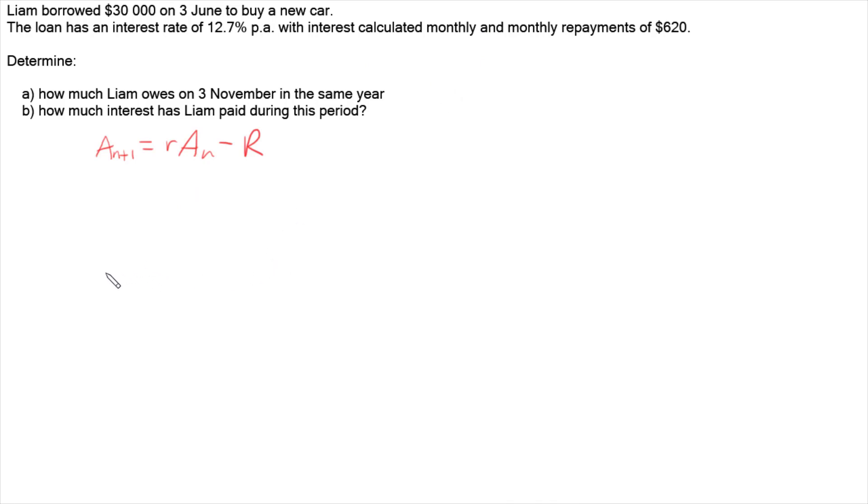We just need to work out the different values in this rule. A0 is our initial value in the loan, that's our $30,000. Capital R is our repayment, $620.